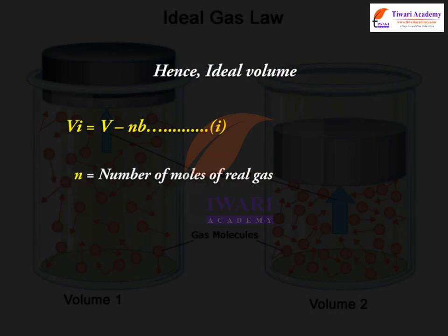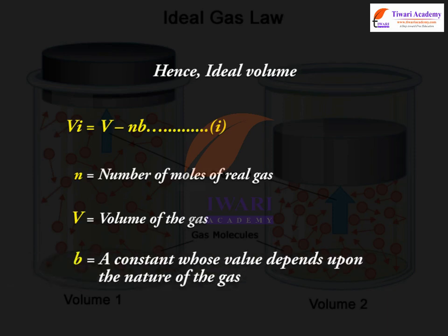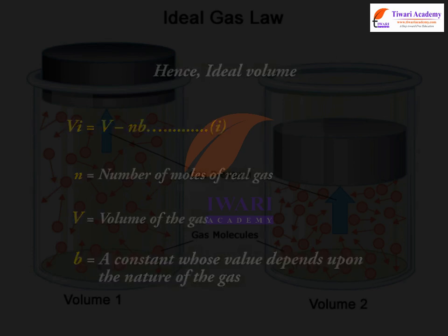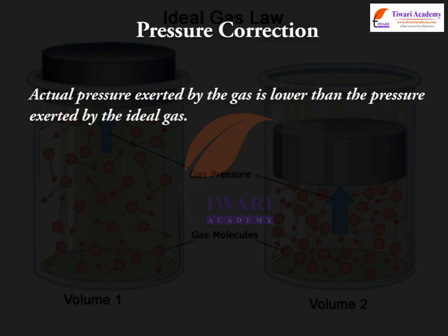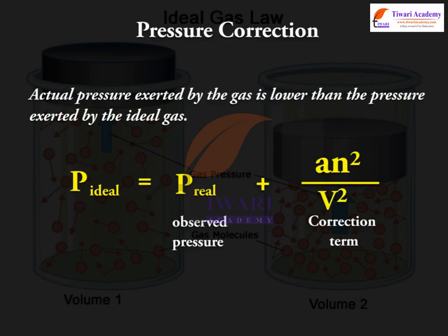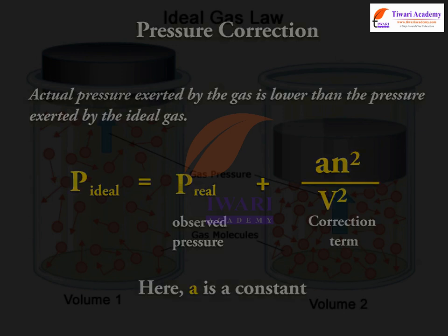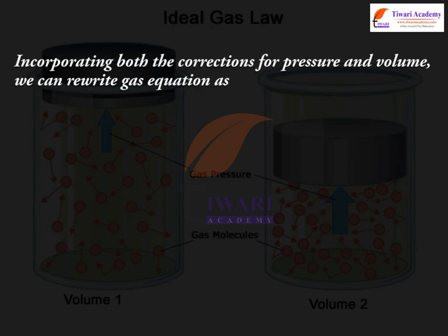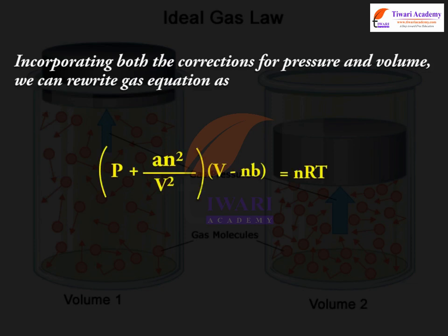Here, n = number of moles of real gas, V = volume of the gas, B = a constant whose value depends upon the nature of the gas. Pressure correction: The actual pressure exerted by the gas is lower than the pressure exerted by the ideal gas. P-ideal = P-real (observed pressure) + An² / V² (correction term), where A is a constant. Incorporating both corrections for pressure and volume, we can rewrite the gas equation as: (P + An² / V²)(V − nB) = nRT.